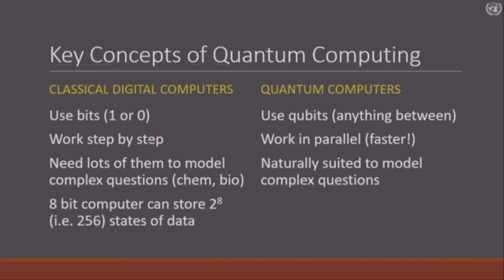So if you have 8 qubits, somehow the math works out to 10 to the power of 77, which is 10 followed by 77 zeros. That's a lot of zeros — more than I could fit on this screen.